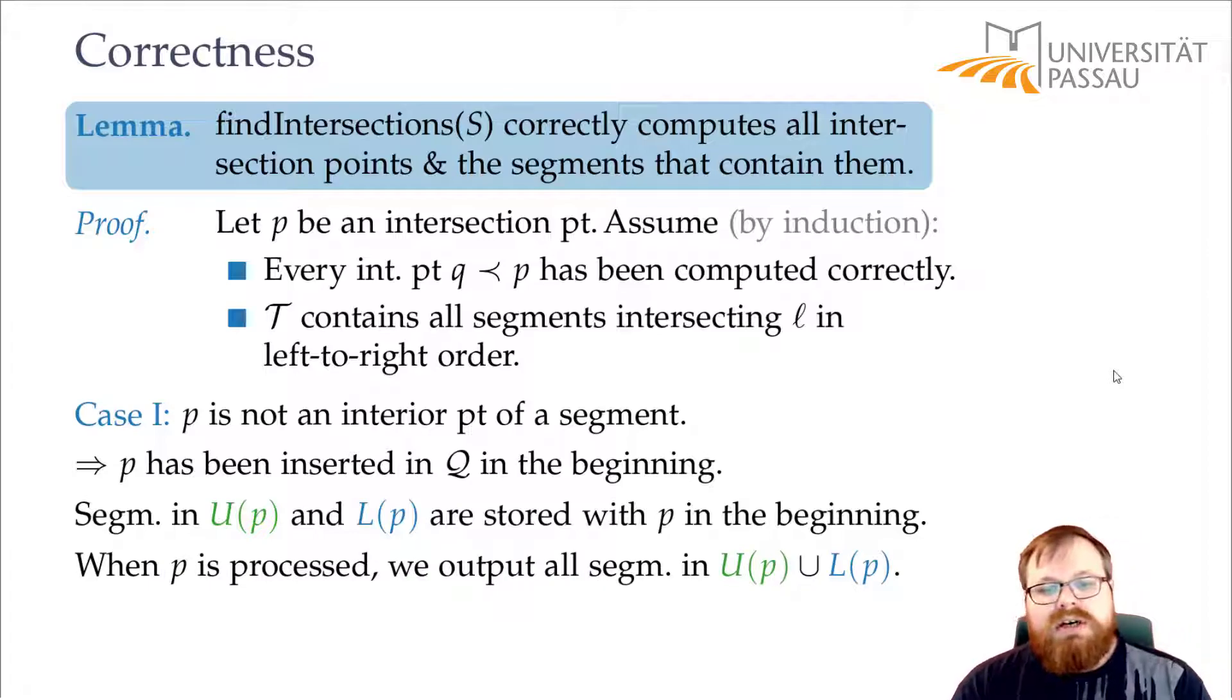When we process this point, we output all the segments in U(P) and L(P). So we output all the segments that start or end in P. Notice that by assumption P is an intersection point, so there are at least two such segments.